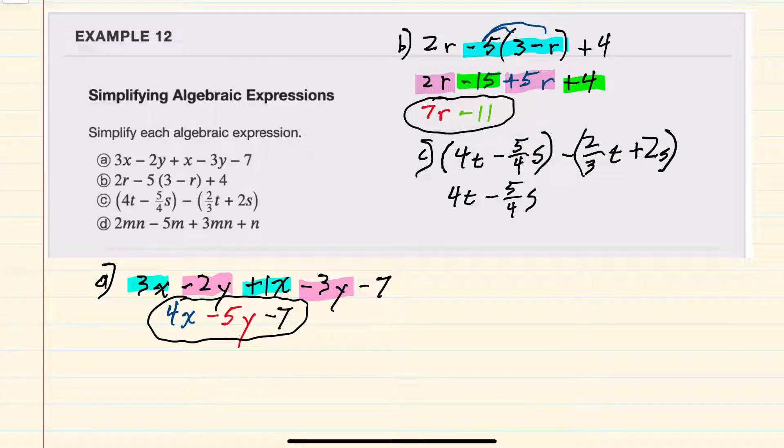For the second parentheses, we do have this minus outside. So it's as if there is a negative 1 that's being multiplied by everything inside the parentheses. We will want to distribute that negative 1 to remove the parentheses. Multiplying negative 1 by 2 thirds t would be a minus 2 thirds t. And then the minus 1 times the plus 2s would be a minus 2s.